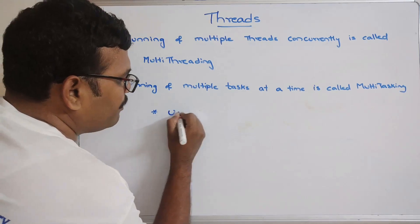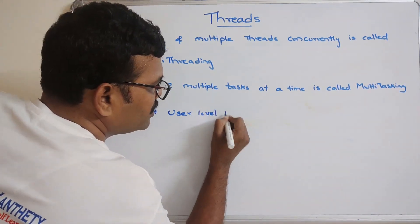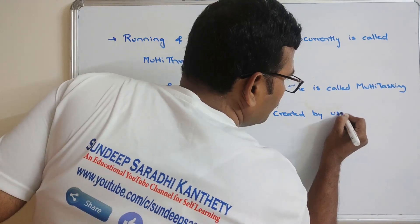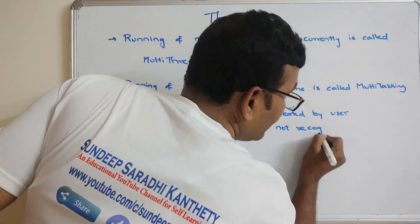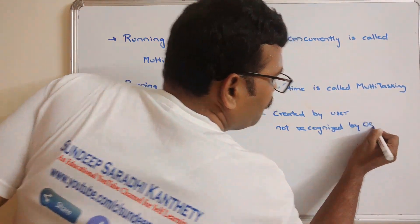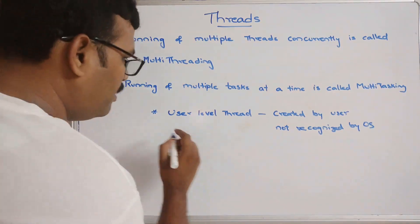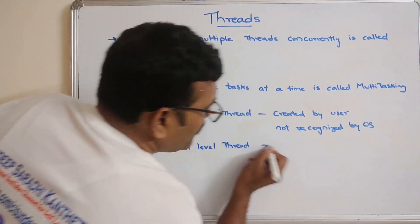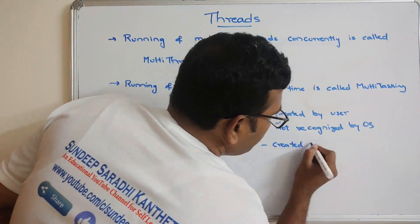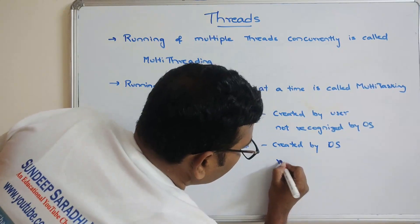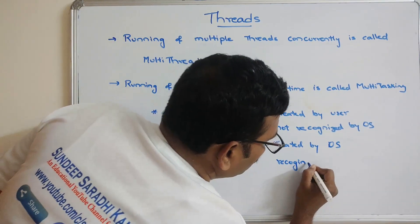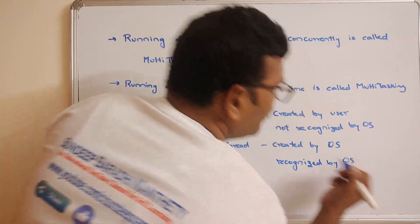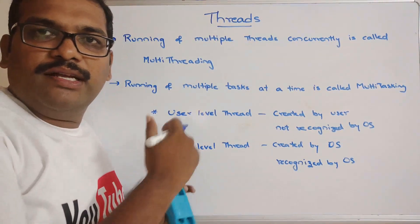One type of thread is a user-level thread, created by the user and not recognized by the operating system — it is recognized only by the user itself. The second type is kernel-level threads, created by the OS and recognized by the user level. So these are the two categories of threads.